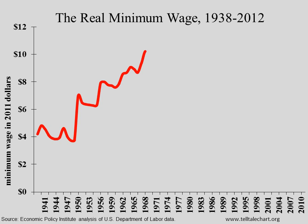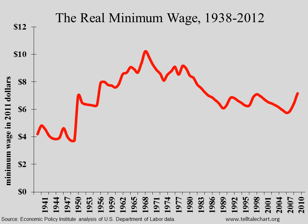But six years elapsed before the next increase, during which time the real minimum fell back to under $8. A series of increases in the 70s barely kept pace with the era's double-digit inflation, and another long gap between increases — between the 80s and 90s — brought the real value of the minimum down near $5 an hour.